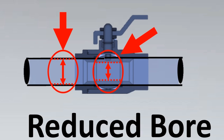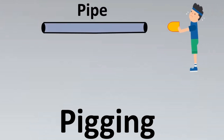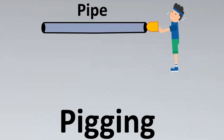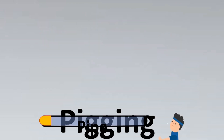Now, when should you use a reduced bore valve versus a full bore valve? The first consideration is pigging. Pigging is a process where you cleanse the pipe by inserting a 'pig' into it. The pig passes through the pipe and removes any impurities or dirt collected inside — it is basically a type of cleaning done to extend the life cycle of pipes.